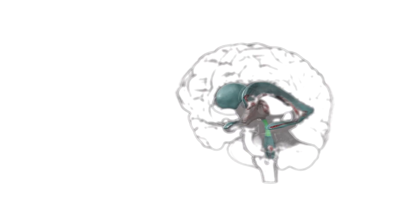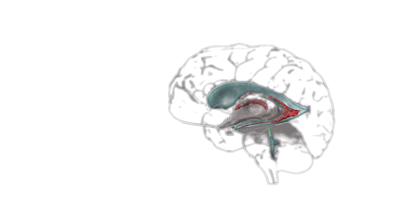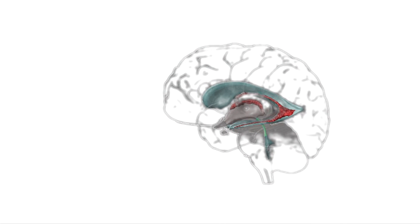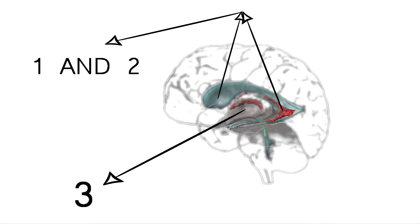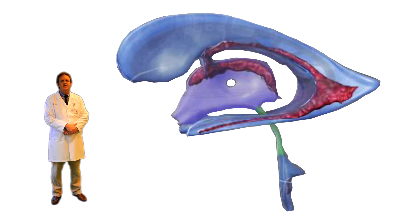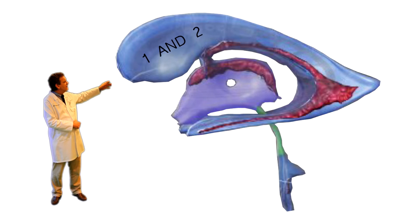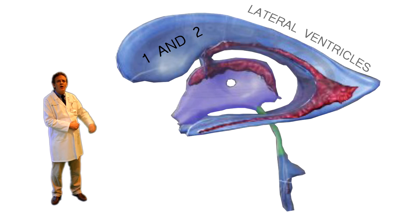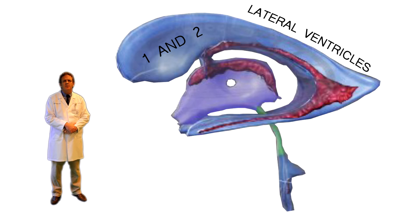However, the primary areas of the brain we are interested in, which are concerned with CSF and the flow of CSF, are the ventricles of the brain, of which there are four.